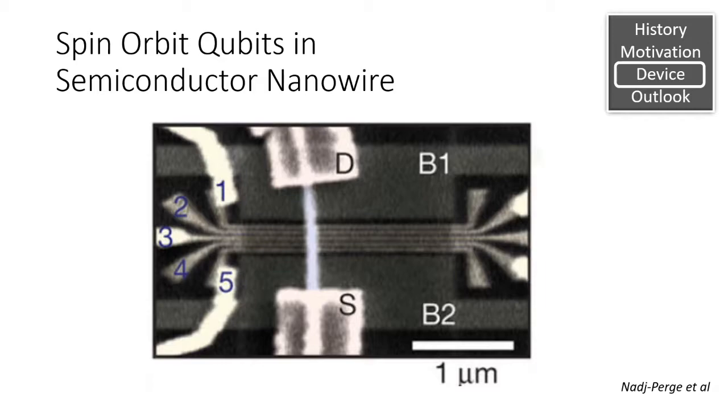Now let's take a look at a specific design of this spin-orbit qubit. This image here is a qubit in an indium arsenide nanowire. Indium arsenide is a current material choice because of the strong spin-orbit couplings. This means we don't require as strong electric fields to flip the spin of the qubits.